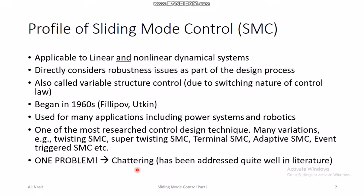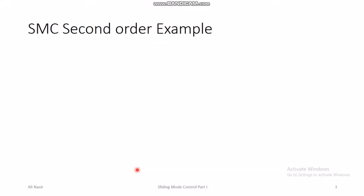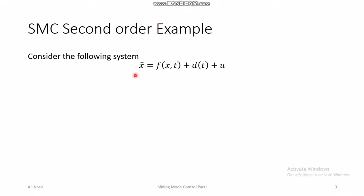Sliding mode control will be discussed in more than one lecture. This is the first part, where we shall discuss the basics of sliding mode control design using a second-order general example. Consider the system: x double dot equals some nonlinear function f(x, t) plus some disturbance d(t) plus control input u. This is a special nonlinear system where the dynamics are a nonlinear function of state and time, there is some disturbance in the dynamics, and the control input appears as a linear term.